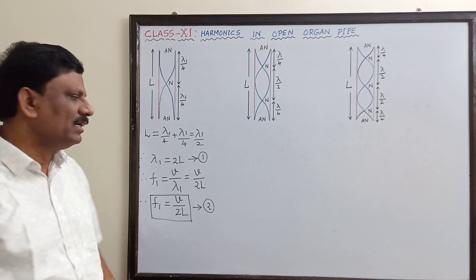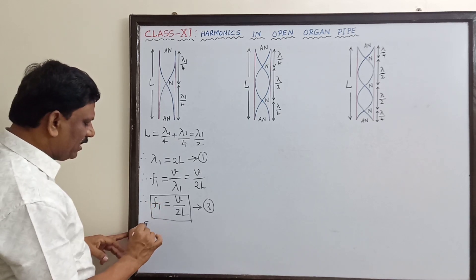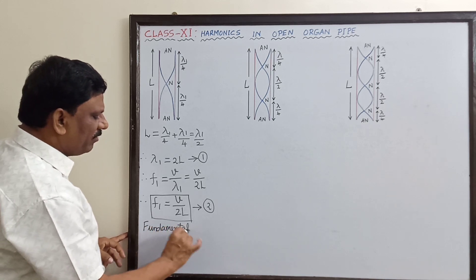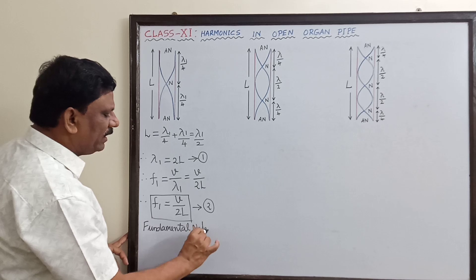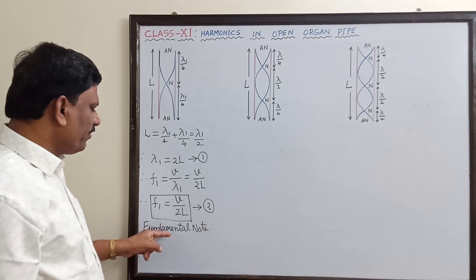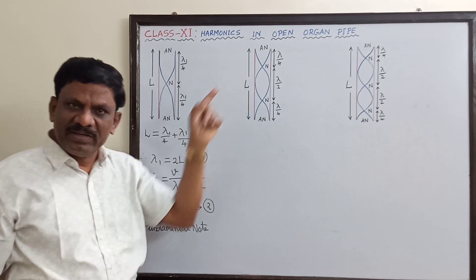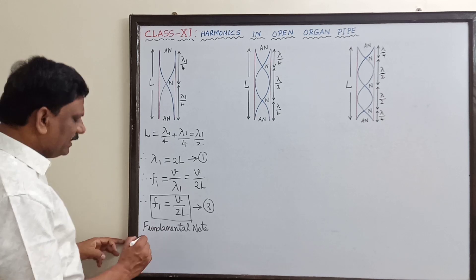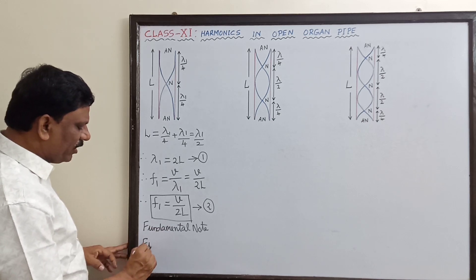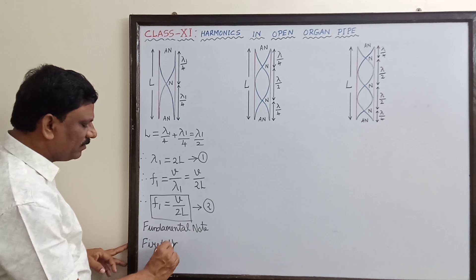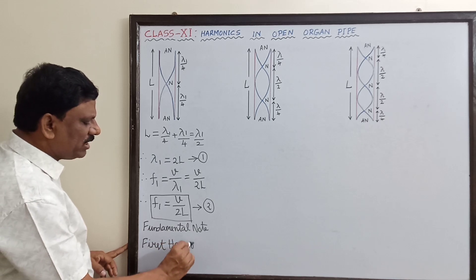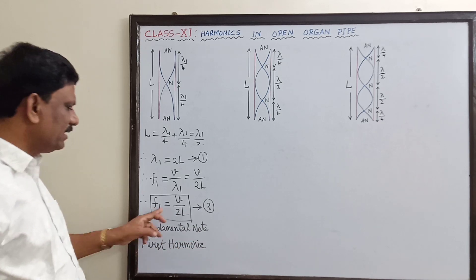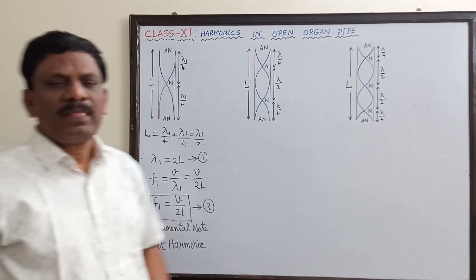This frequency f₁ is called the fundamental note or the fundamental frequency — both are the same. The minimum frequency with which the open organ pipe vibrates is called the fundamental note or fundamental frequency, and another name for this fundamental note is the first harmonic.